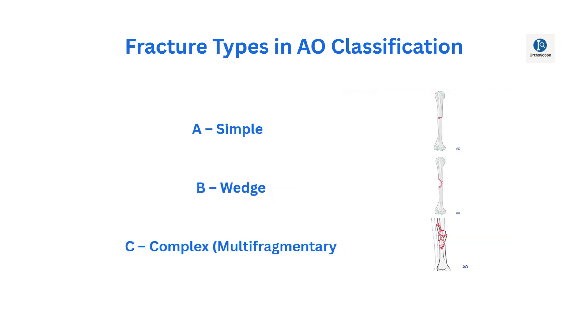Fractures are categorized into three types. Type A is simple, type B is wedge-shaped, type C is complex or multifragmentary.